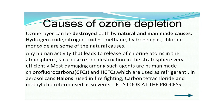Ozone layer can be destroyed by both natural and man-made causes. Natural causes include hydrogen oxide, nitrogen oxide, methane, hydrogen gas, and chlorine monoxide. Any human activity that releases chlorine atoms into the atmosphere can very efficiently cause ozone destruction in the stratosphere. The most damaging agents are human-made chlorofluorocarbons (CFCs) and hydrochlorofluorocarbons (HCFCs), which are used as refrigerants and in aerosol cans.